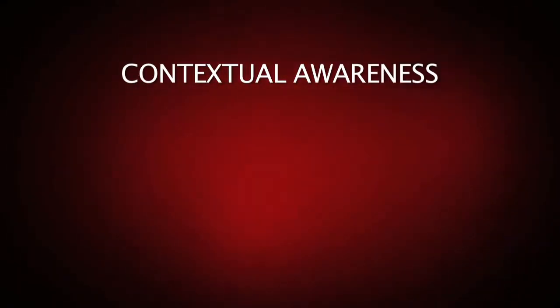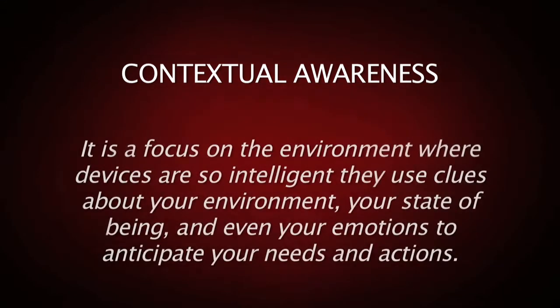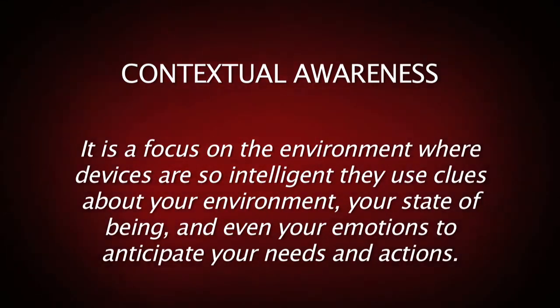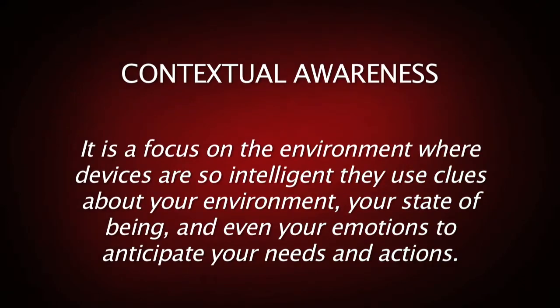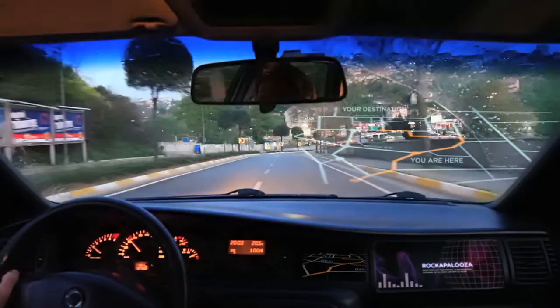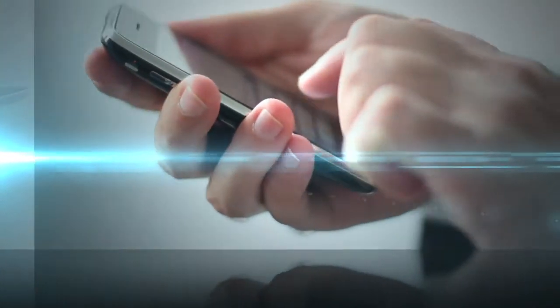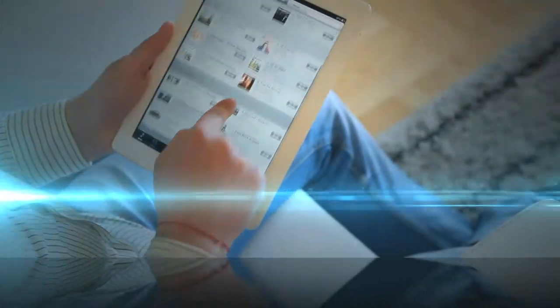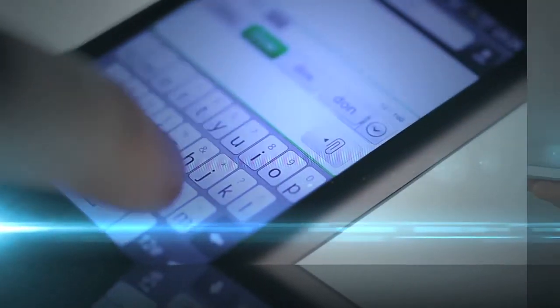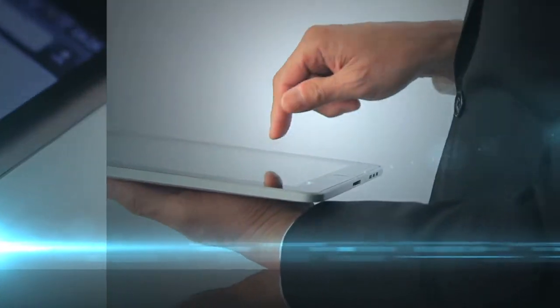Contextual awareness is the third phase of this revolution. It is a focus on the environment, where devices are so intelligent they use clues about your environment, your state of being, and even your emotions to anticipate your needs and actions. We are already seeing early innovation in this phase. Imagine sensors proactively advising you to avoid traffic or high pollen counts, or sensors that know if you are in distress, then contacting emergency services and family on your behalf.